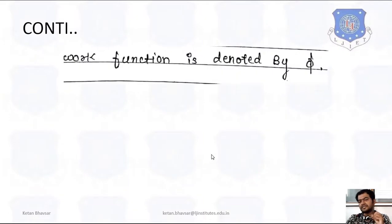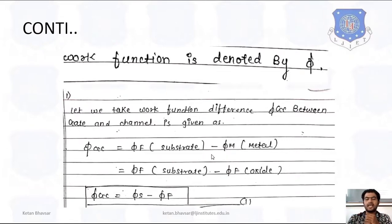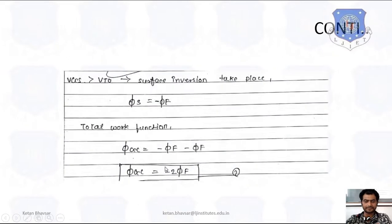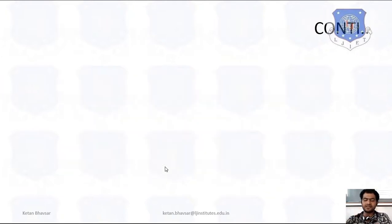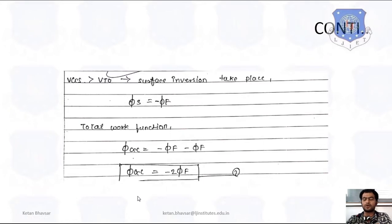The work function difference is denoted by phi. Taking the first condition, φGC between gate and channel: as per the energy band diagram we consider the substrate, so φGC equals φS minus φM, where M is for metal and S is for the substrate. Now if VGS is greater than Vto, the channel starts forming. Near the surface, negative charge is produced, so φS equals −φF. Substituting into the equation, we get φGC equal to −2φF.